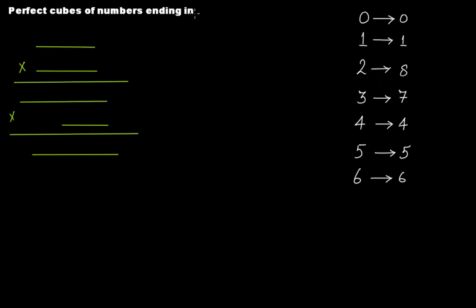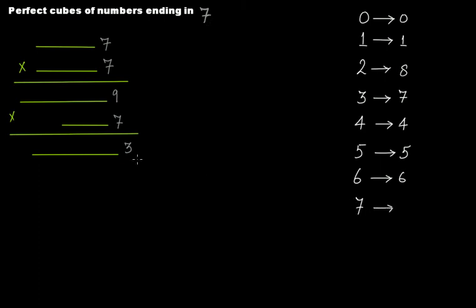If your number ends in 7: 7 times 7 is 49 — so 9 at the units place and 4 carried over. Then 7 times 9 is 63 — so 3 at the units place and 6 carried over. It means that if your number ends in 7, the perfect cube will end in 3.